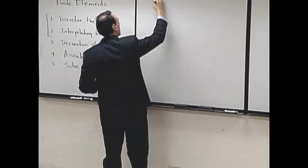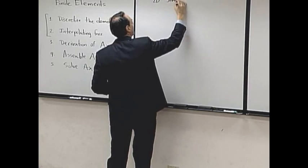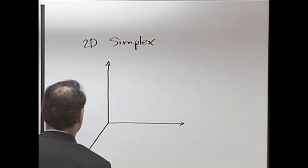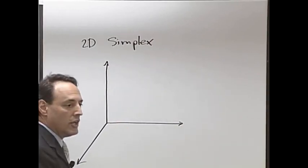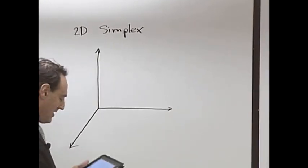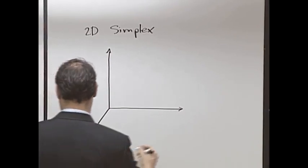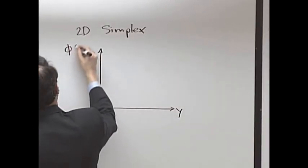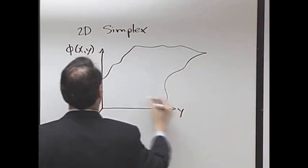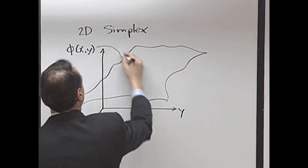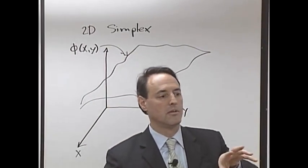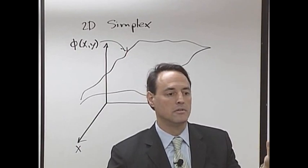First we gotta do a cool drawing. Ready for a cool drawing? Great, me too. Let's see how I pull this off. Here's my x, here is my y, and here is my function φ(x,y), and I have basically some surface. This is my solution, exact solution. And what I'm trying to do with this exact solution is represent it by triangles, patches of triangles.